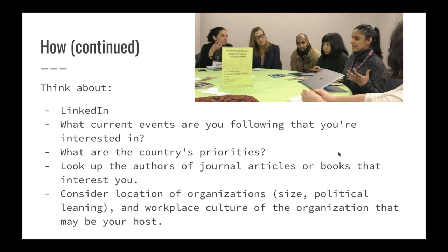If you're stumped for ideas, think about current events that interest you, or what priorities a particular country has — that might lead you toward a good affiliate. You can also look up the authors of journal articles or books that interest you; perhaps they might have a good connection. Also consider location, size, political leaning, and workplace culture of the organization that might be your host. All of this can guide you toward someone or some organization that is an excellent fit for your needs.